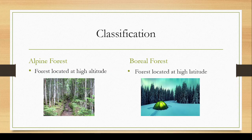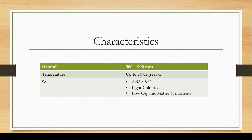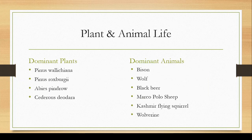The characteristics of the alpine and boreal forest are: rainfall of 300 to 900 millimeters, and temperature up to 10 degrees Celsius. Sometimes there is a constant cover of snow, categorized by long, severe winters where temperature can be below the freezing point. The soil there is acidic, light colored, with low organic matter and nutrient supply. Therefore, only a limited category or biodiversity of organisms inhabits the coniferous alpine and boreal forest.